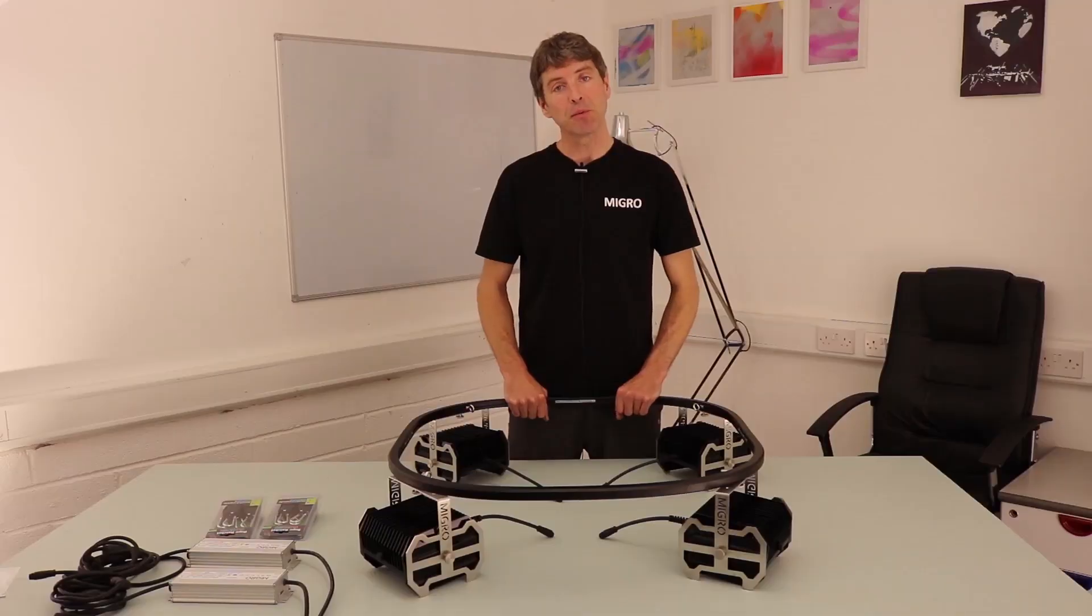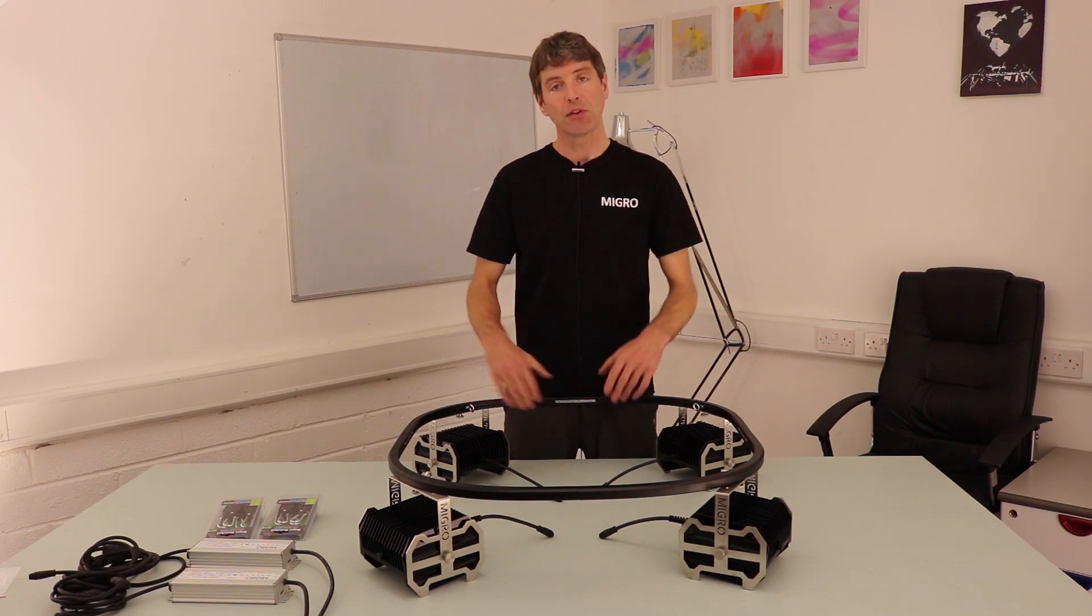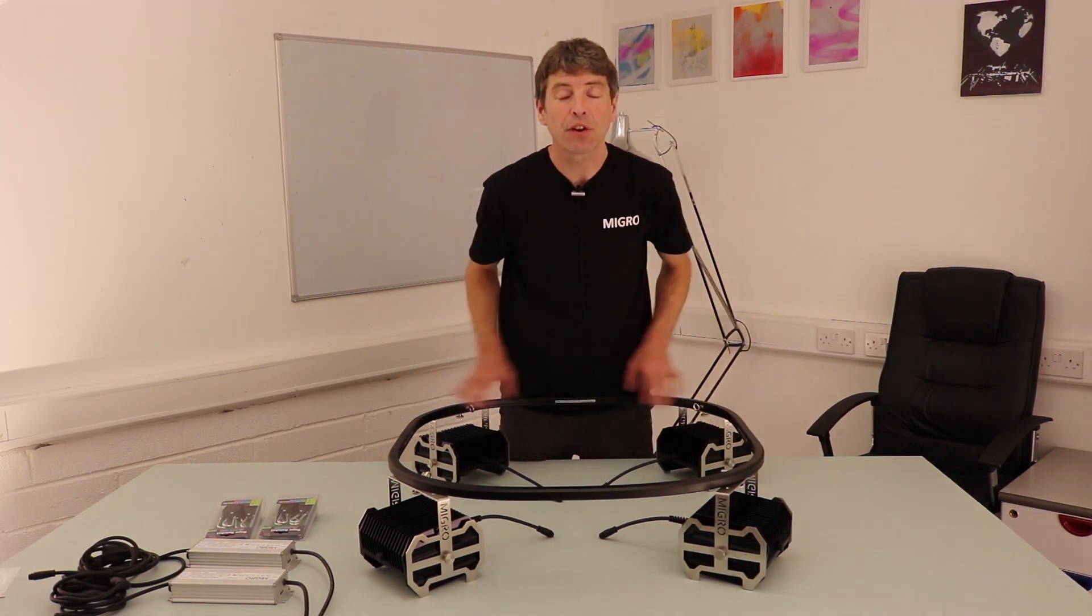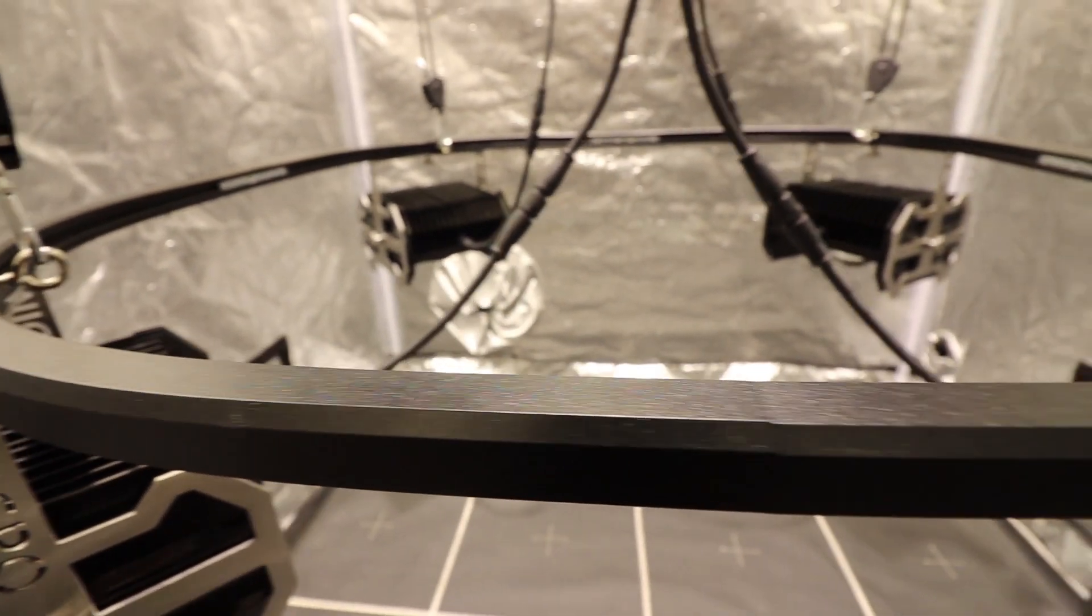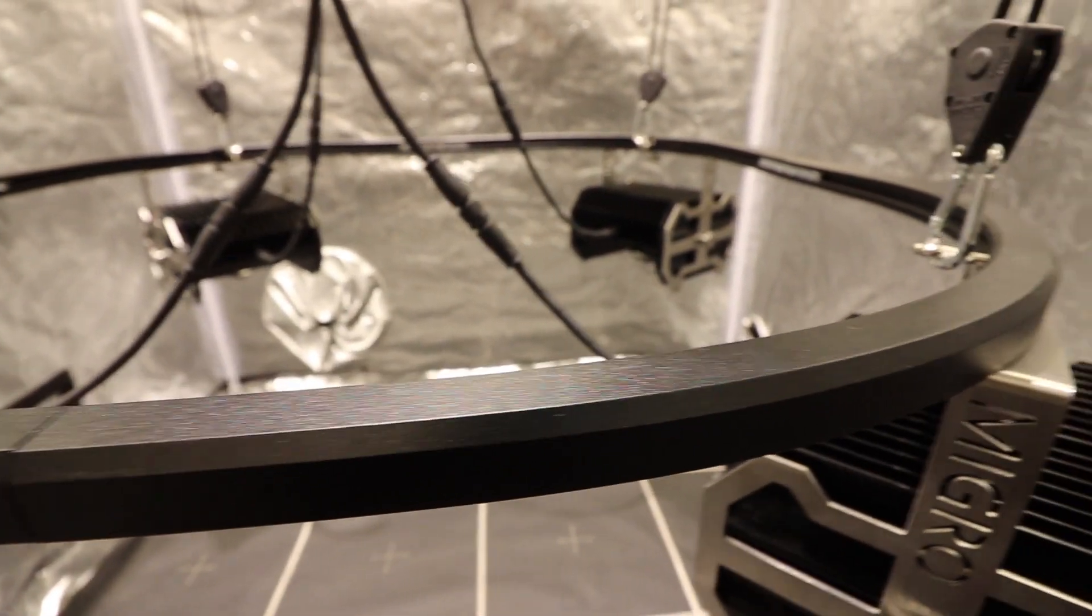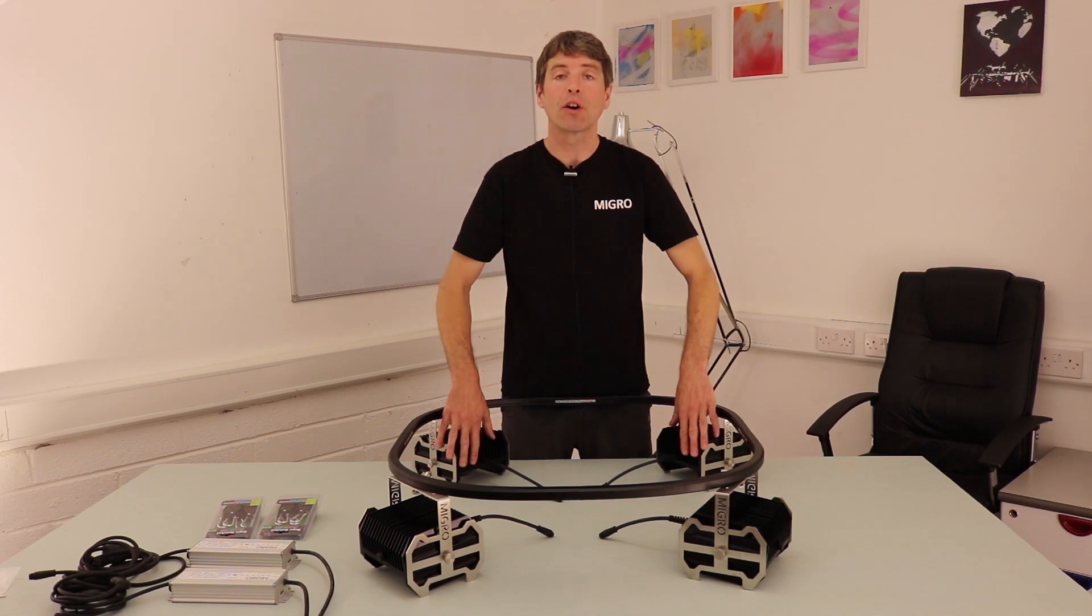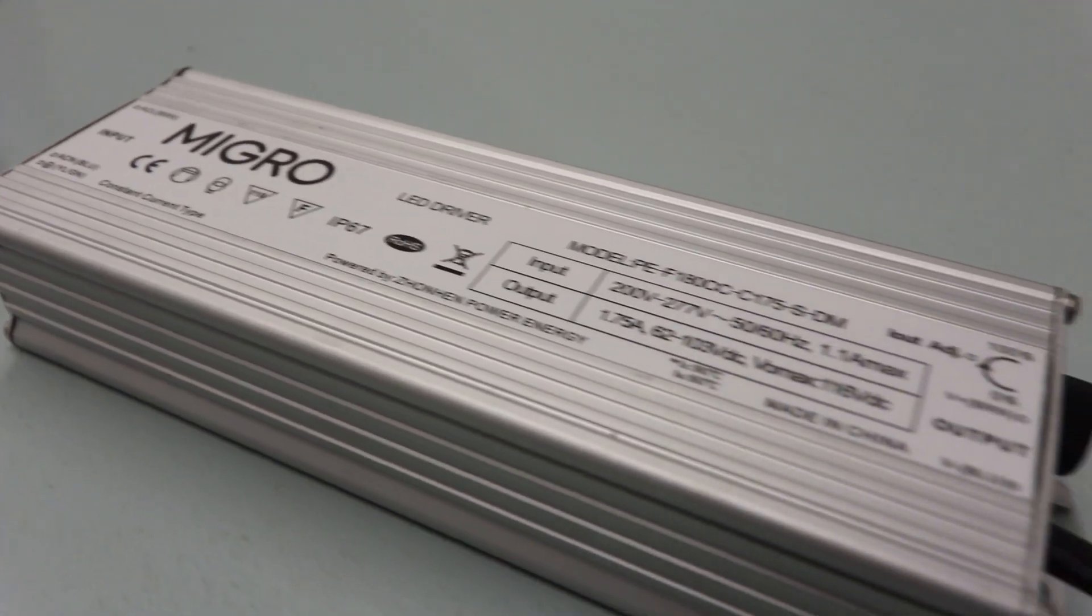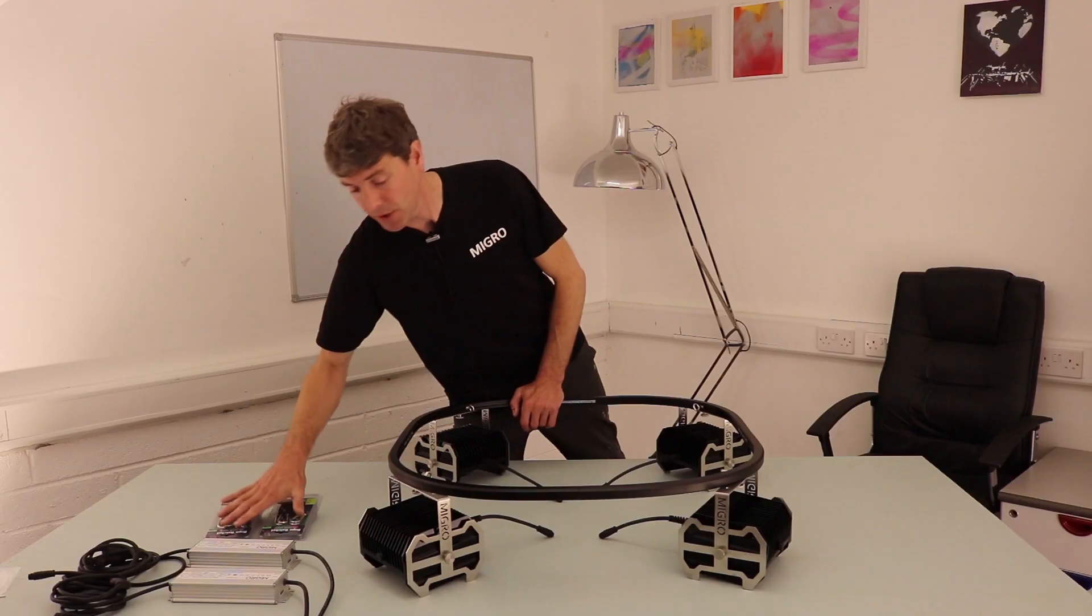Let's look at the assembly of the MIGRO 400. Starting off with a look at the components. We have the circular hanging frame, an aluminum anodized profile. We have 4 LED grow lights, 2 LED drivers, cables and hangers.